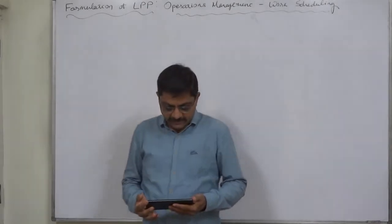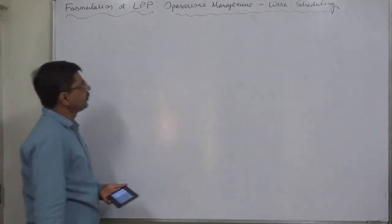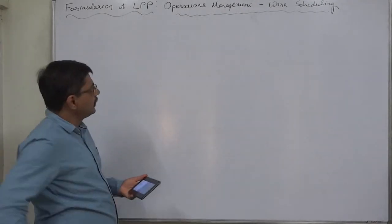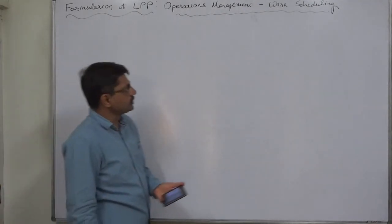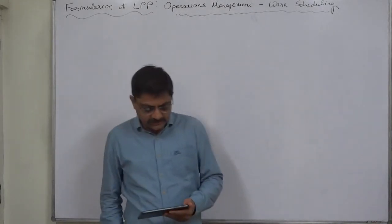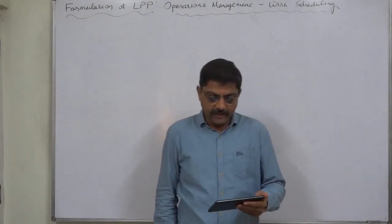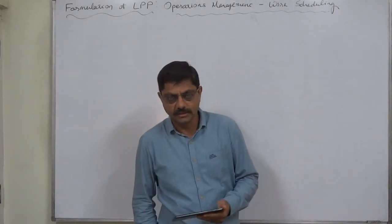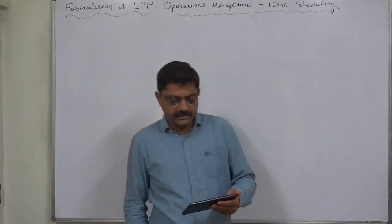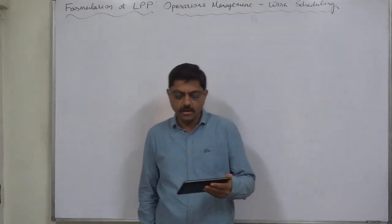Hello friends, one more case in formulation of linear programming problem. This time we are going to cover a problem of operations management — work scheduling. The case is: a steel company has two iron mines having different production capacity. The raw iron is classified into three categories: high grade, medium or fair grade, and low grade, according to quality.